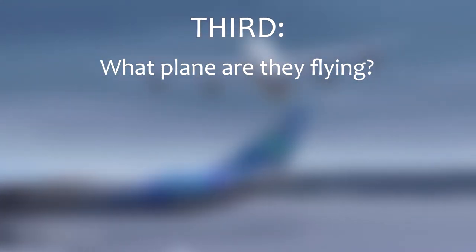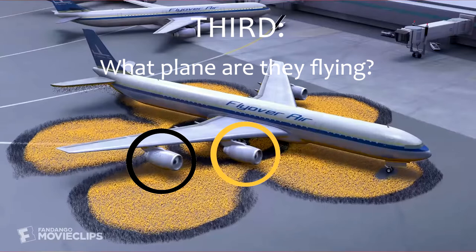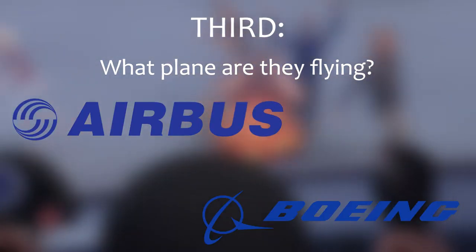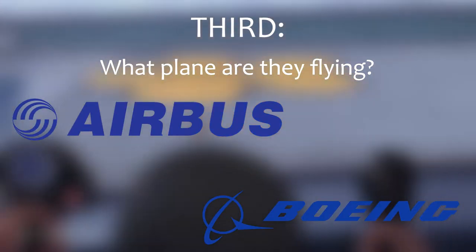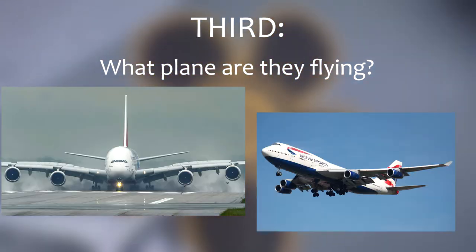Third, we have to determine what kind of plane Vanessa and Barry are flying. Looking at the movie, the plane that's being flown has four turbofan engines. This narrows down the number of aircraft drastically, as all modern planes built by Airbus and Boeing, the two largest and most prominent modern aircraft manufacturers, have two turbofan engines, except for the Airbus A380 and Boeing 747.